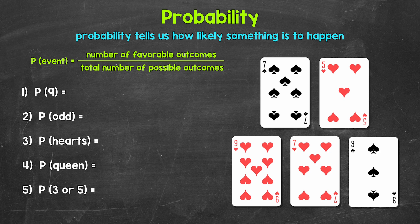Let's jump into our examples, where we are going to say that the playing cards are face down on a table so we cannot see what they are. We're going to randomly select one, so each card has an equal chance of being selected. We have five events that we are going to find the probability of. Let's start with number one: the probability of picking a nine. So picking a nine is our event.